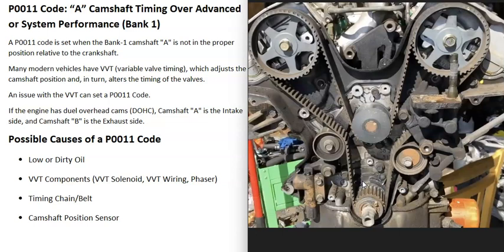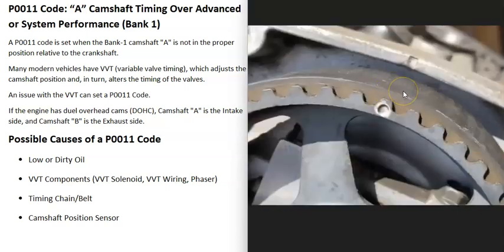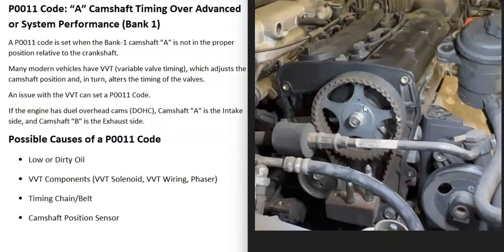Another thing that could cause this is a bad timing chain or timing belt. The engine has timing marks and they all need to line up, or it can throw everything off and cause issues. If the timing belt or timing chain slips a notch and a mark is a little before or after where it's supposed to be, that can cause problems. Usually when there's a timing belt or timing chain problem, you'll get a lot of other codes as well.